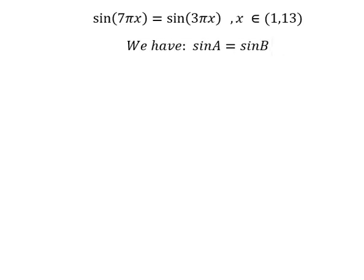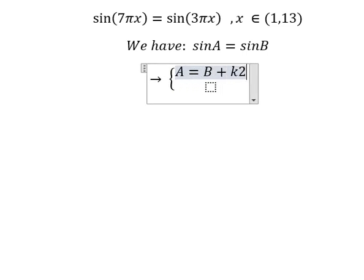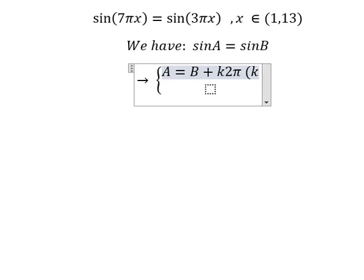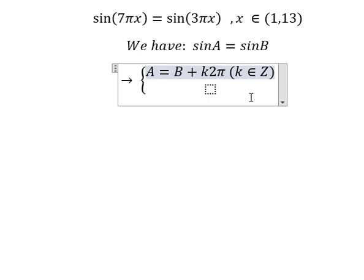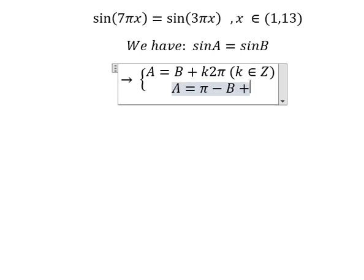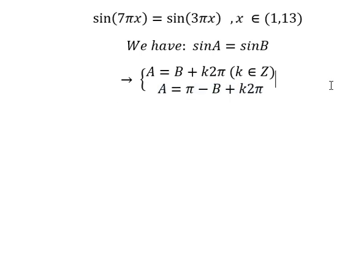So that should be like this. A equals to B plus k times 2π, where k belongs to integers. And the next one: A equals to π minus B plus k times 2π. Now we can apply the formula.